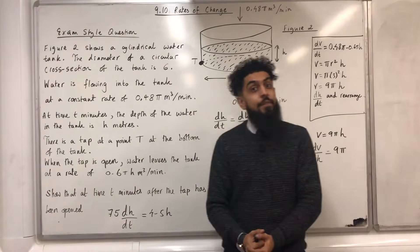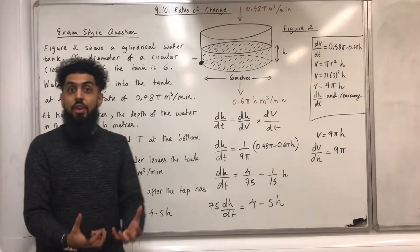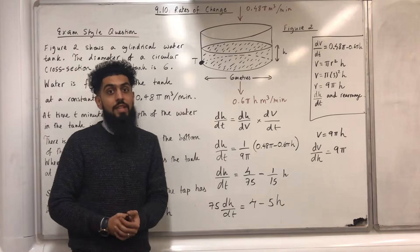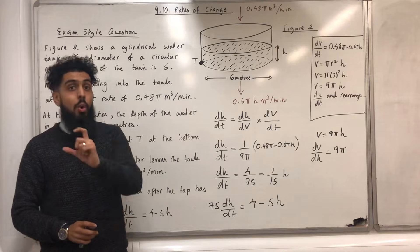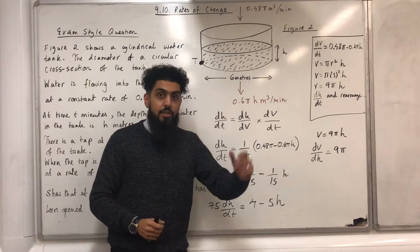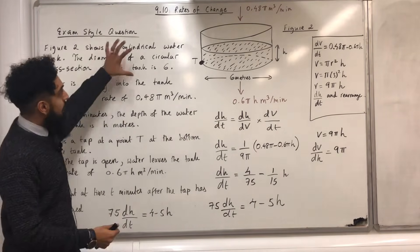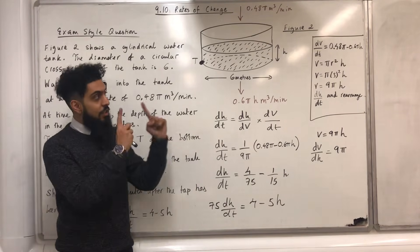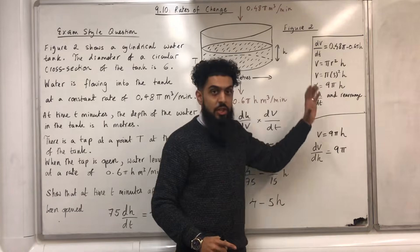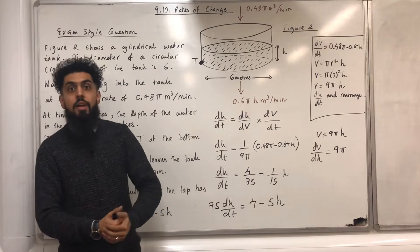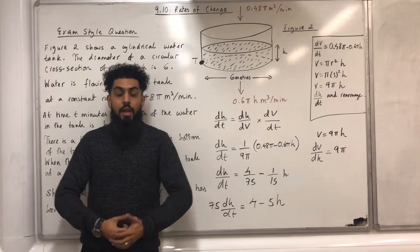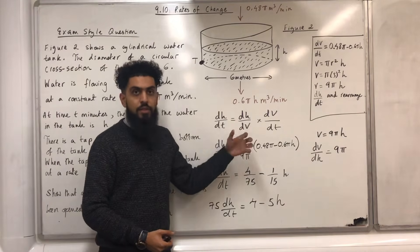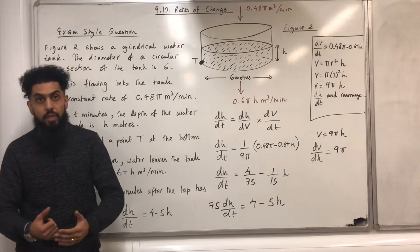A tip for the exam: if the phrase 'rate of change' is used in a question, you know you're dealing with differentials. Even if they just use the word 'rate', you're dealing with differentials. Extract as much information as you can from the question and use that information to generate your differential equation. In most cases, you will need to use the chain rule to generate your differential equation. See you next time.